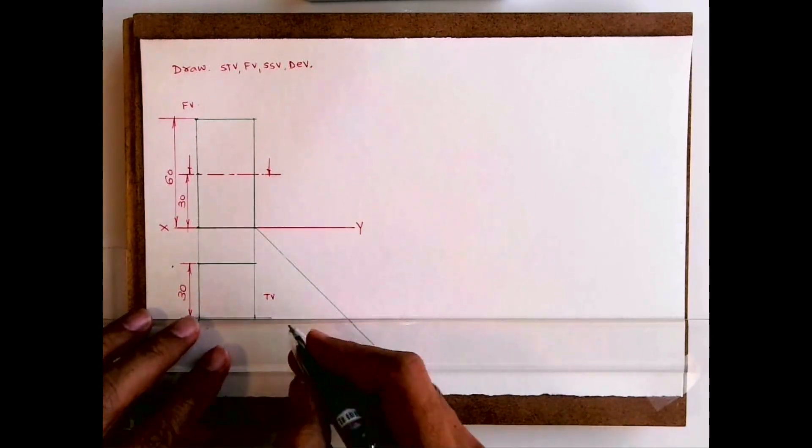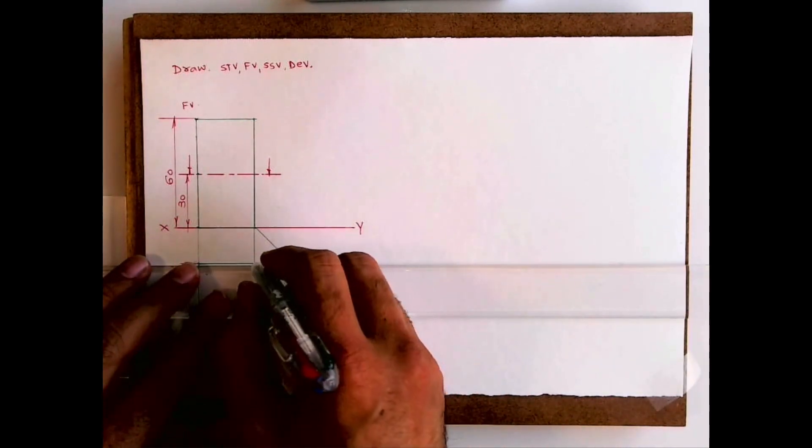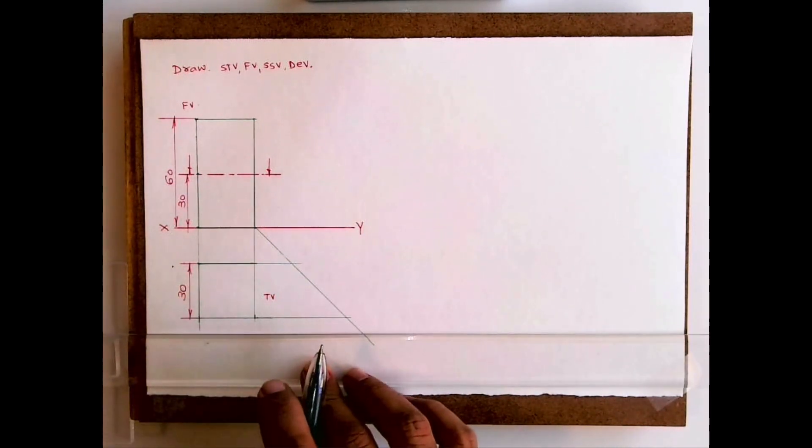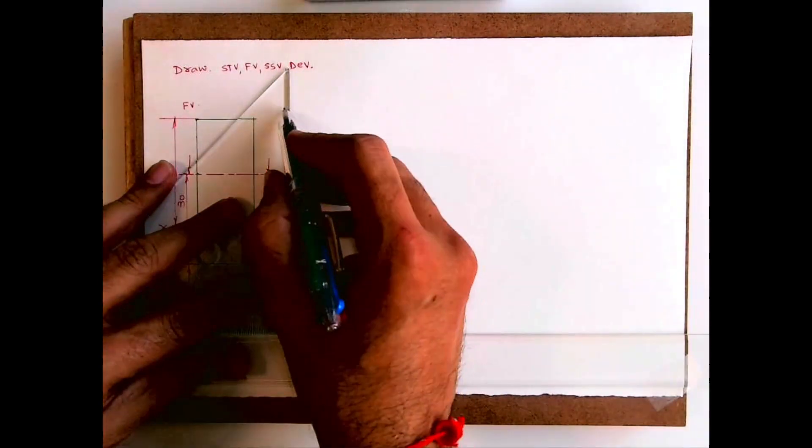Then they want sectional side view. In this case we can draw only side view, we can't draw section. I'll explain you afterwards. A lot of people have issues with this.